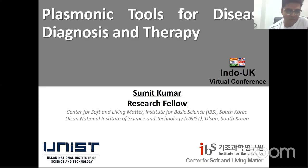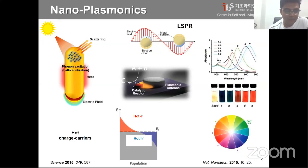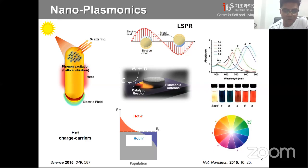Nanoplasmonics is a unique property of nanoparticles due to their strong absorption and scattering when they interact with electromagnetic radiation. They absorb light and process it through radiative and non-radiative decay. The non-radiative decay generates lattice vibration, which produces heat — and that heat can be used for controlling chemical reactions.